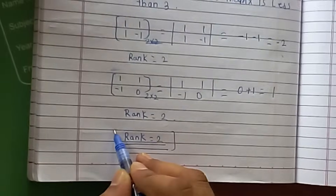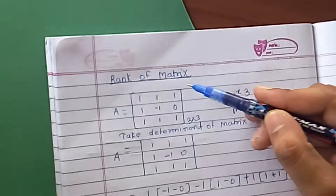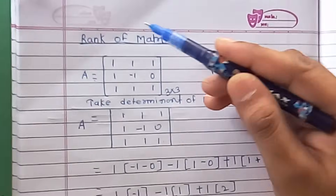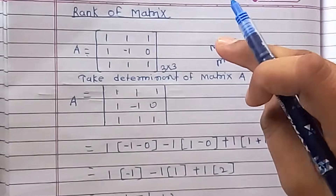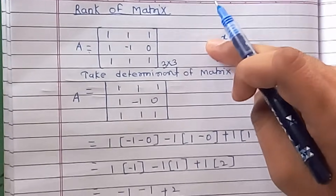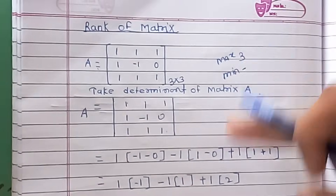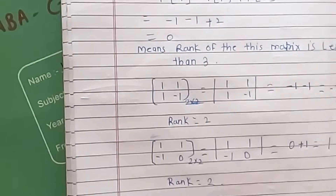This type of question is asked in the exam. If they have given a non-square matrix, such as a 4x3 matrix, then we have to consider the largest square submatrix — a 3x3 matrix — for finding out the rank. That's all.